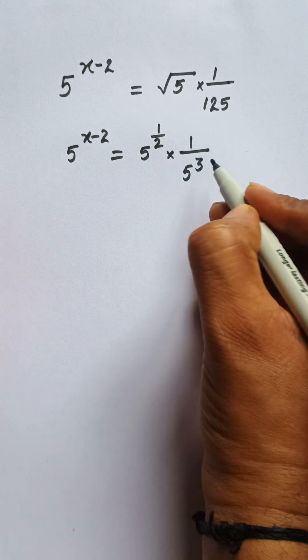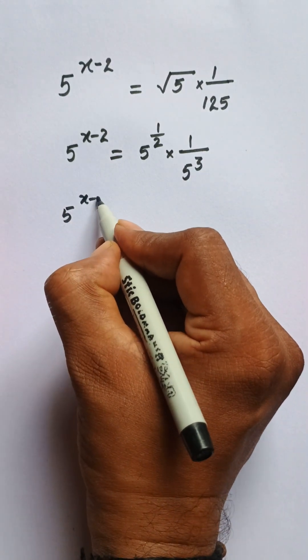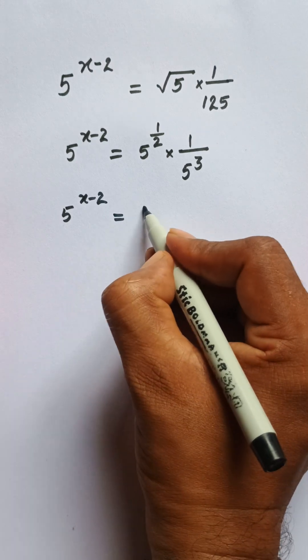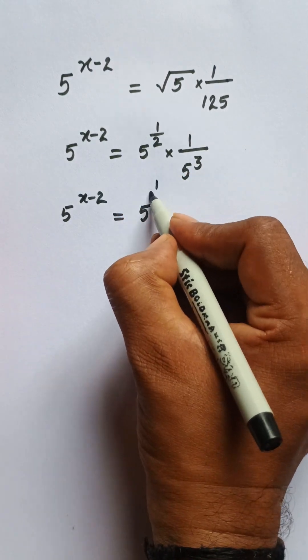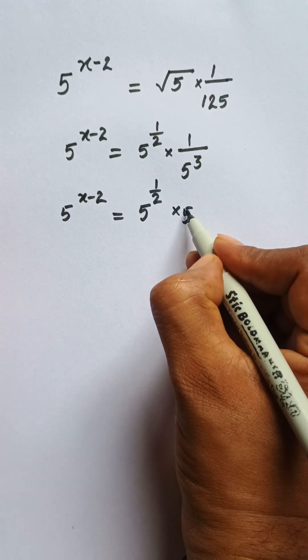...written as 5 to the power 3. In the next step we have 5 to the power x minus 2. I can write 5 to the power 1/2, and this will go up so that its power will be changed from 3 to negative 3.